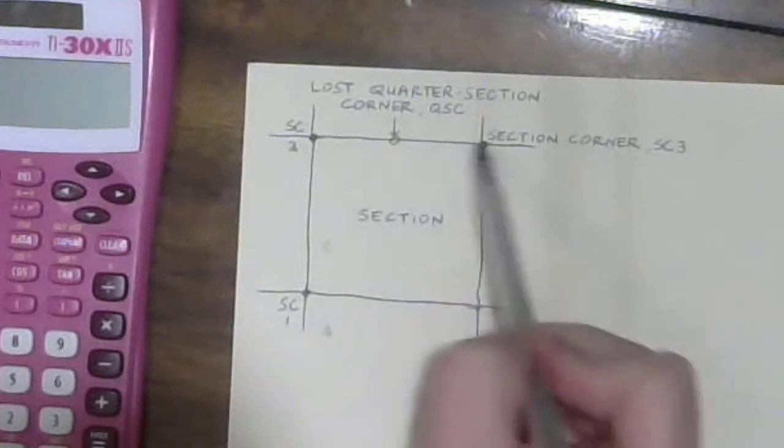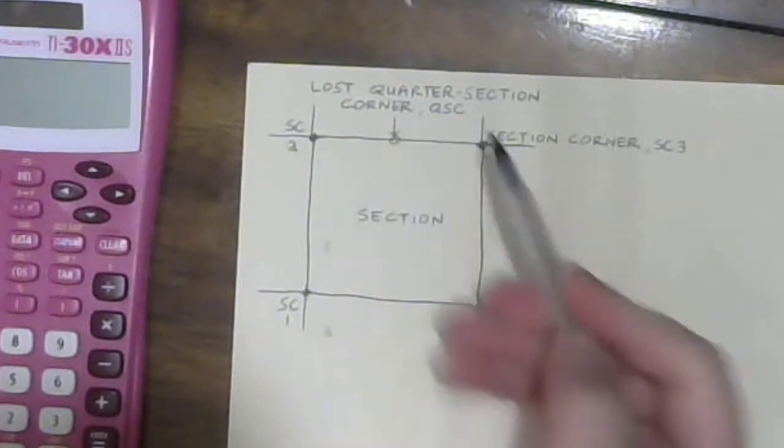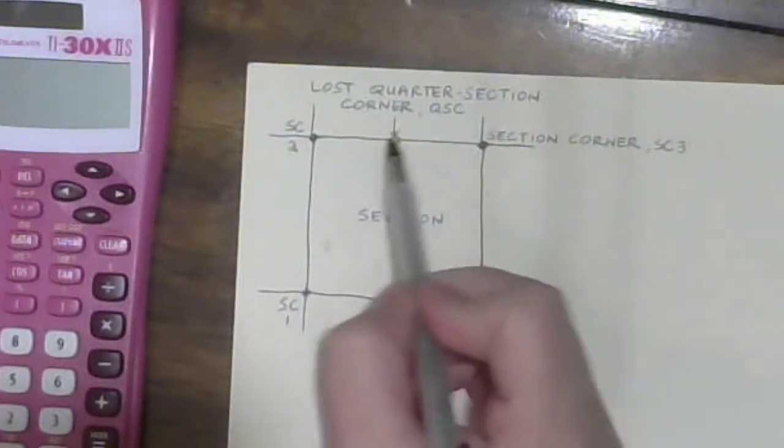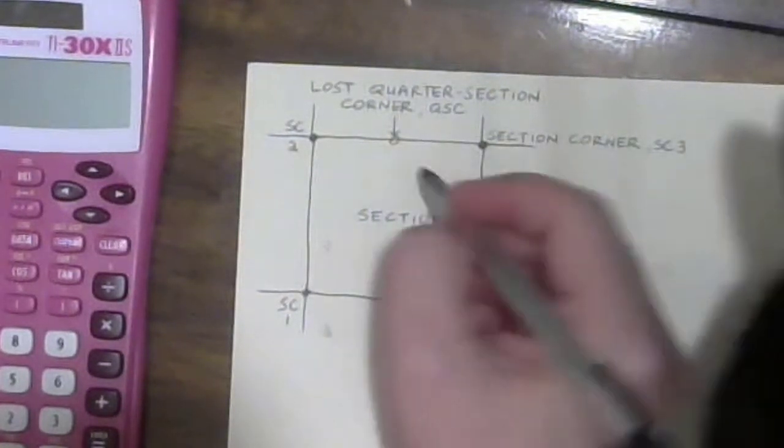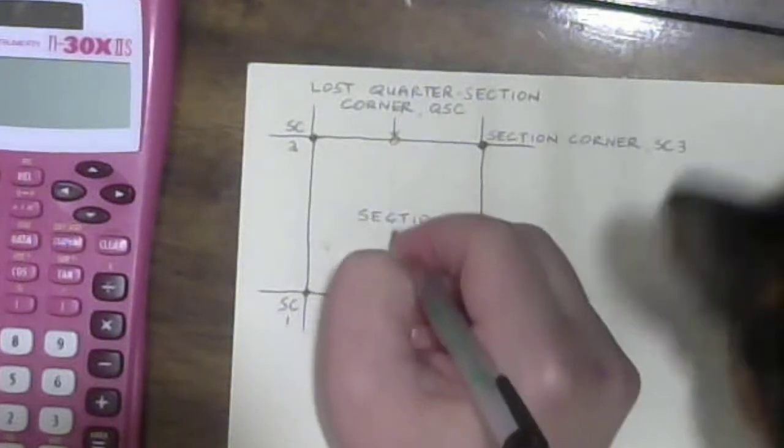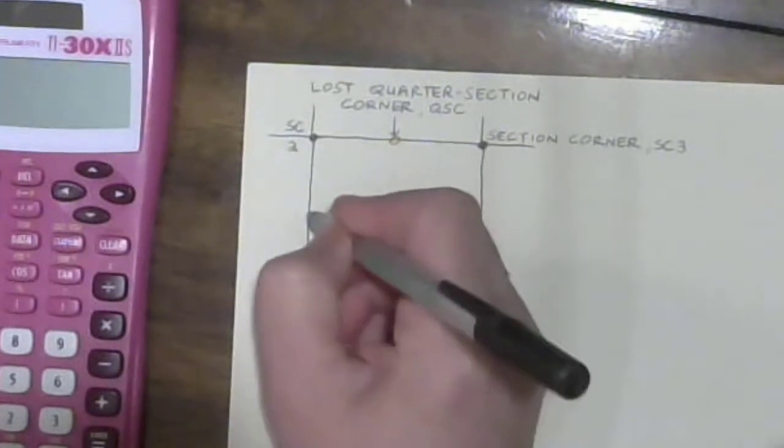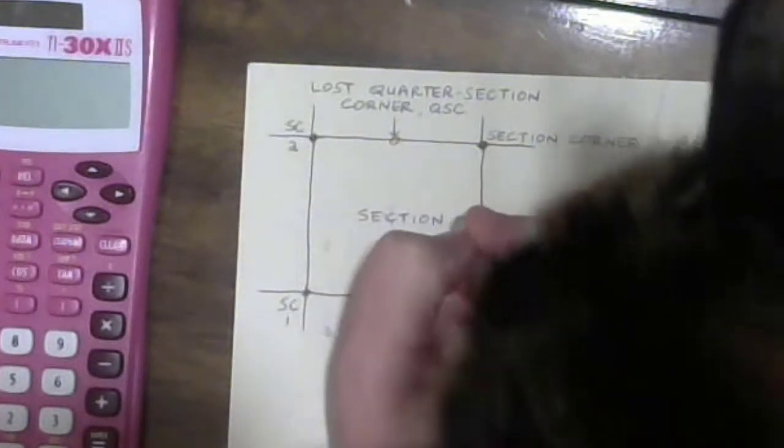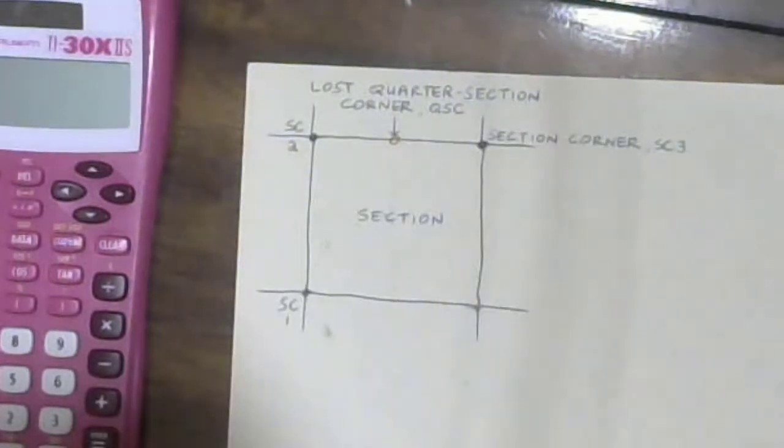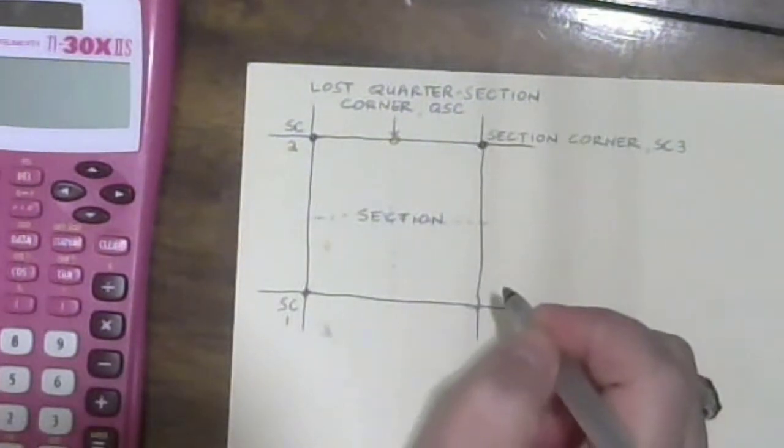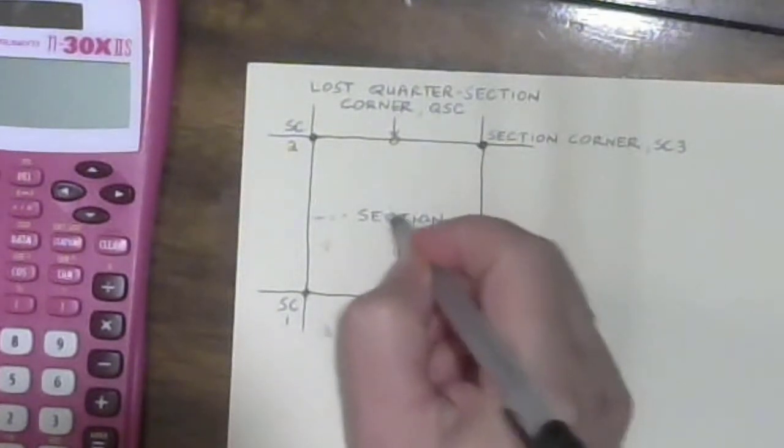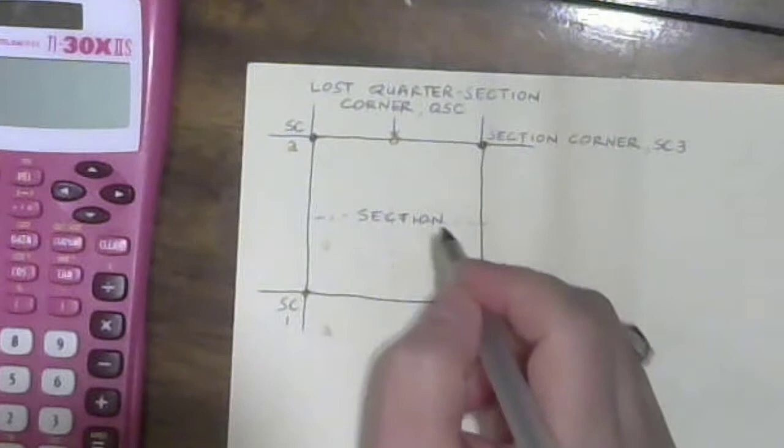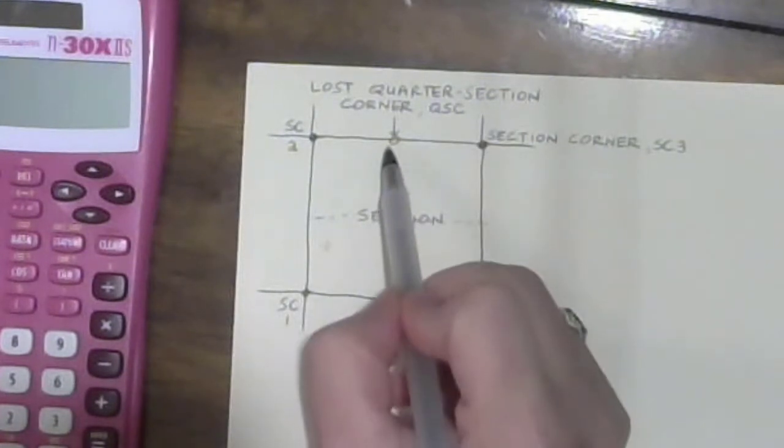Halfway between section corners there is what is called a quarter section corner and you may think well it's halfway, why is it called a quarter section? And that is because if you connect all of the quarter section corners you get quarter sections. So that is why it is called a quarter section corner and there is also one in the center as well, but let's imagine that this is the one that is lost.